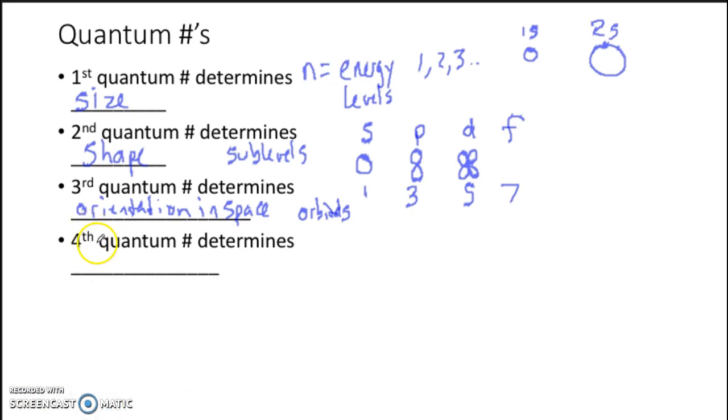And then this last one, the fourth quantum number, determines what we call spin. And things can spin up or they can spin down. And this refers to individual electrons.